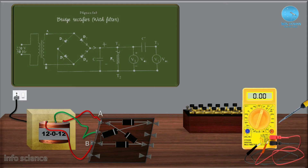Now we have four diodes connected. We add the capacitor filter — that is the electrolytic capacitor, 1000 microfarad 16V. Now we connect the load resistor.